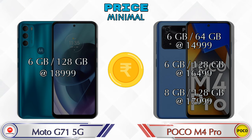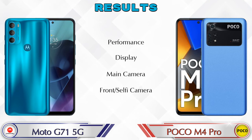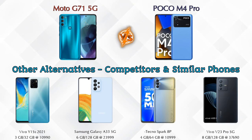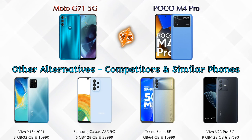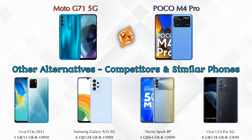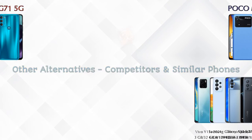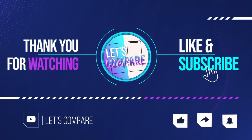For the results: in performance both phones are the same; in display both phones are the same; in the main camera the Poco M4 Pro is ahead; in the front selfie camera both phones are the same. For other competitors at the same price, there is the Vivo Y15s 2021, Samsung Galaxy A33 5G, Tecno Spark 8 Fan, and Vivo V23 Pro 5G. Details about all competitor phones are available in the description. If you liked our video, please like and subscribe — thanks for watching!